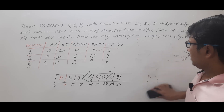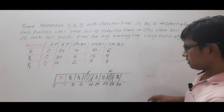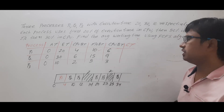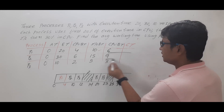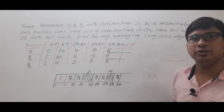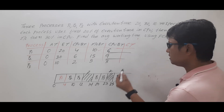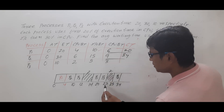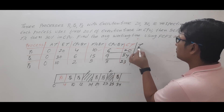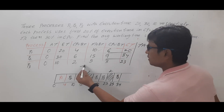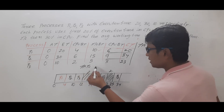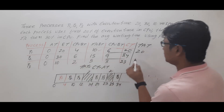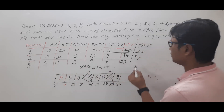Now with this information, we compute the completion time and then the turnaround time of each process. Turnaround time equals completion time minus arrival time. For P1: 20 minus 0 is 20. For P2: 34 minus 0 is 34. For P3: 23 minus 0 is 23.